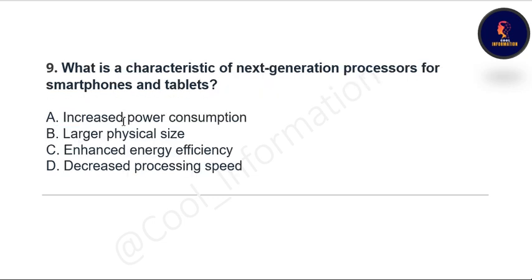Next question: what is the characteristic of next-generation processors for smartphones and tablets? Options are: increased power consumption, larger physical size, enhanced energy efficiency, and decreased processing speed. The correct option is C — enhanced energy efficiency.